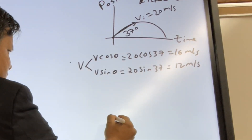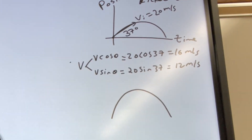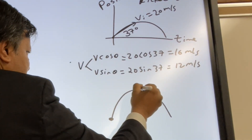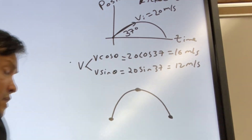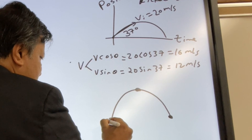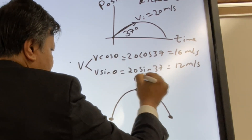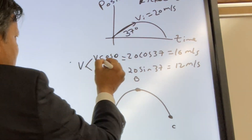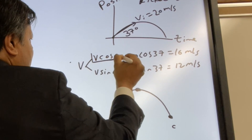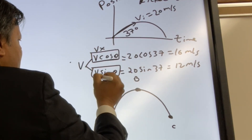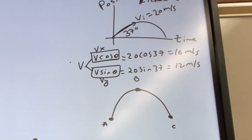This is the trajectory that the ball takes. The ball is shown at three different locations — location A, location B, and location C. At location A, we have two vectors: we are going to call them Vx and Vy.